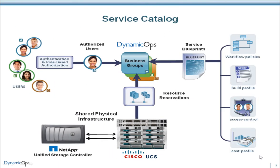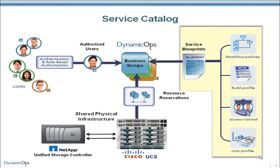In this demo, we will be provisioning a Cisco UCS blade server using NetApp LUN-level FlexClone technology. Before we start this process, let's first examine the Dynamic Ops Service Blueprint that will be used to specify how the server will be built.